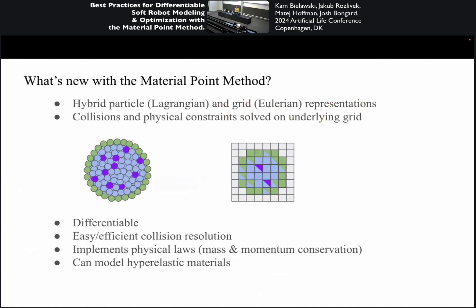So what's the material point method? It's a combination of a particle-based method and a grid-based method, where you basically have two different representations of your material that you switch between. You get the flexibility of a particle-based simulation method and the computational tractability of grid operations. The material point method is differentiable, easy and efficient, and actually physically realistic.